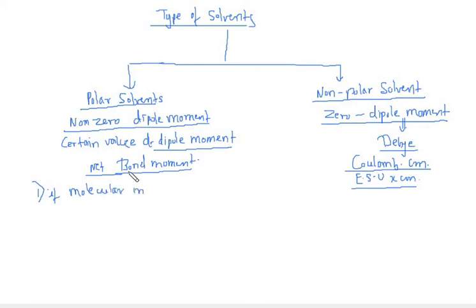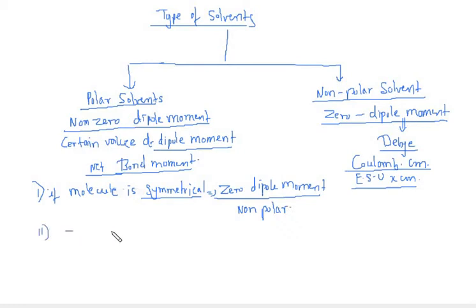First, if molecule is symmetrical, then it will have zero dipole moment and it is said to be non-polar. But if the molecule is unsymmetrical then it is said to have certain value of dipole moment and it is said to be polar.